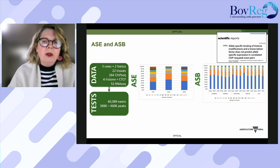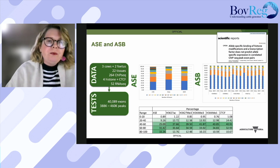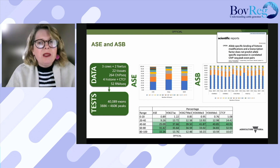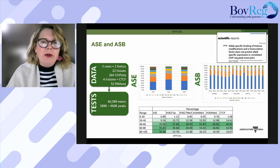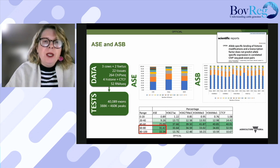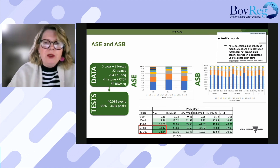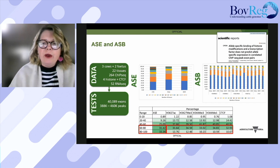It's possible the direction of the bias is the same in other tissues but there's not enough power to reach significance. The table shows the percentage of times the direction of the effect was the same across 0–20% up to 80–100% of other tissues tested, averaged across three cows. The majority of exons with significant allele-specific expression in at least one tissue showed the same direction of bias across more than 60% of tissues tested. However, for the four histone marks and CTCF, this drops to about 40%.